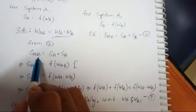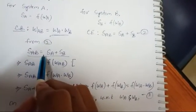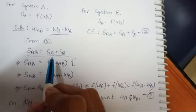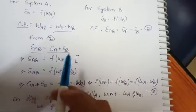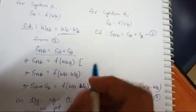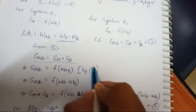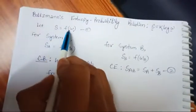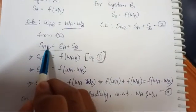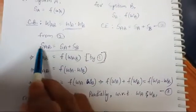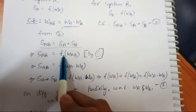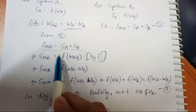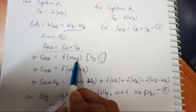From equation two, the combined entropy is S_A plus S_B. Since S is a function of W, S_AB should also be a function of F of W_AB. So S_AB can be written as F of W_AB, where W_AB equals W_A dot W_B.